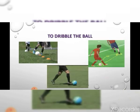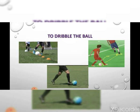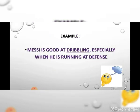To dribble the ball. Dribbling is maneuvering a ball by one player while moving in a given direction, avoiding defenders attempting to intercept the ball. A successful dribble brings the ball past defenders legally and creates opportunities to score. We may usually see dribbling in football. Example: Messi is good at dribbling, especially when he is running at the defense.